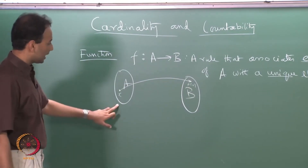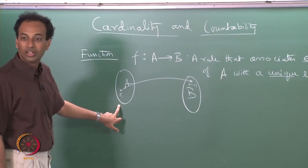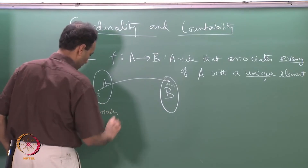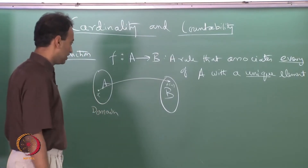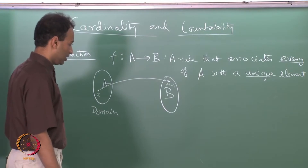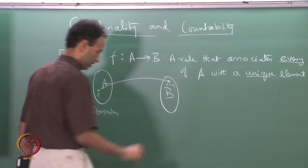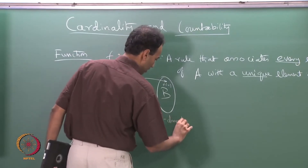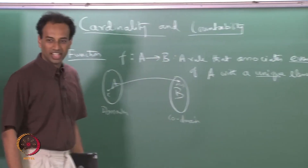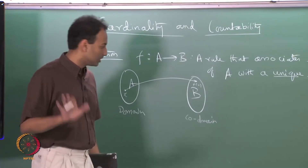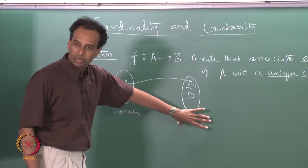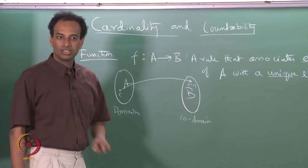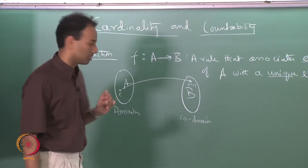The set A is called the domain and set B is called the co-domain. There is some inconsistency in terminology — some people call it the range — but we will call set B the co-domain and reserve the term range for a related but slightly different concept.